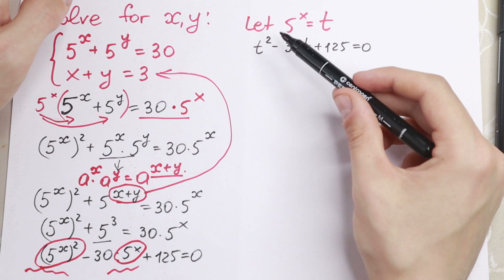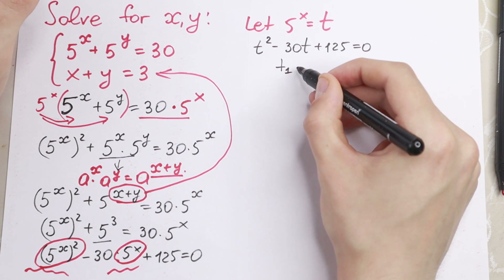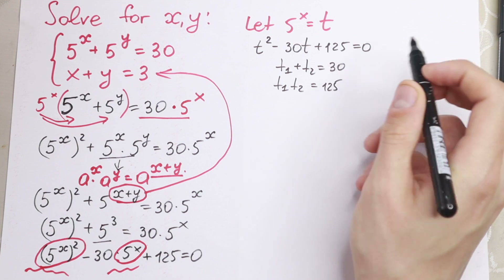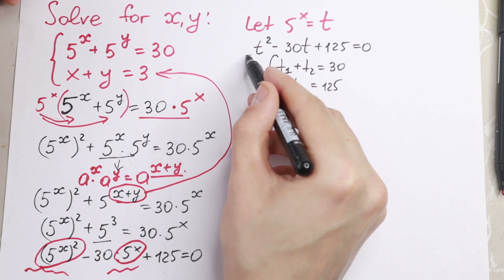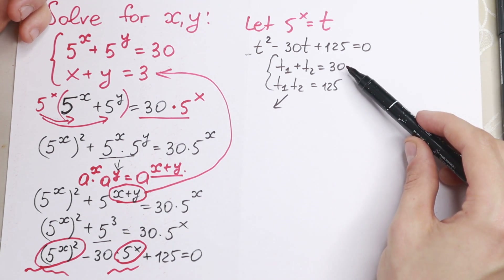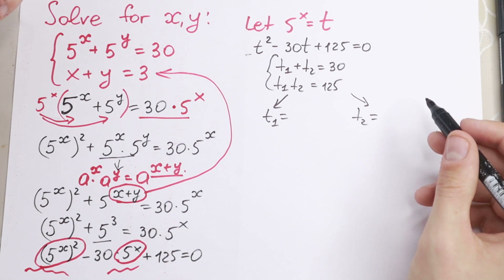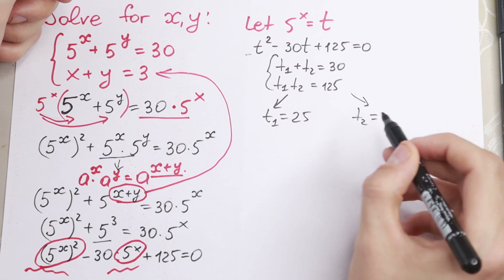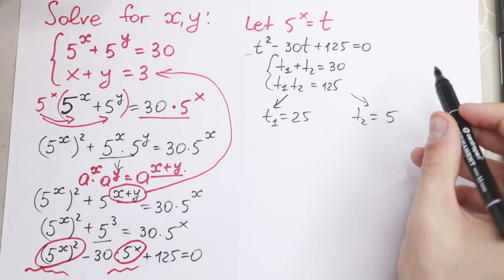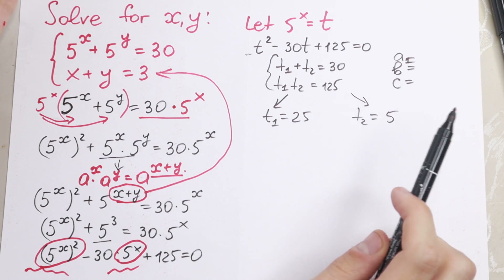There are many ways to solve this quadratic equation, but I want to show my approach — Vieta's theorem: the sum equals negative b, so t1 plus t2 equal to 30, and the product t1 times t2 equal to 125. I use this when the leading coefficient equals 1. We need two numbers whose sum is 30 and product is 125. Those numbers are 25 and 5, because 25 plus 5 equals 30 and 25 times 5 equals 125. Of course you can also solve it using the quadratic formula with a, b, and c.